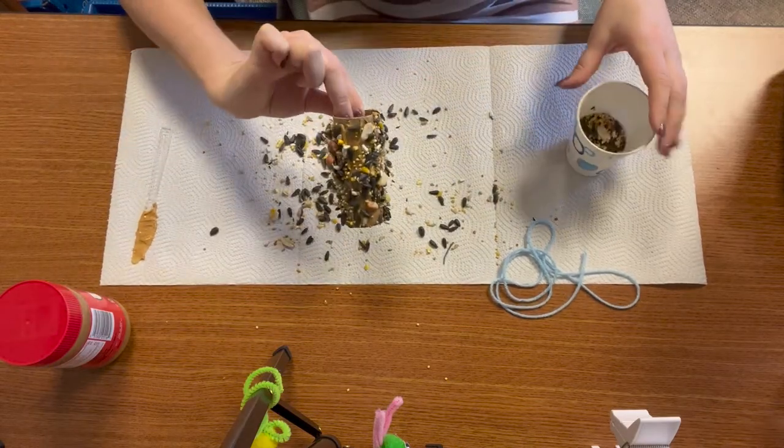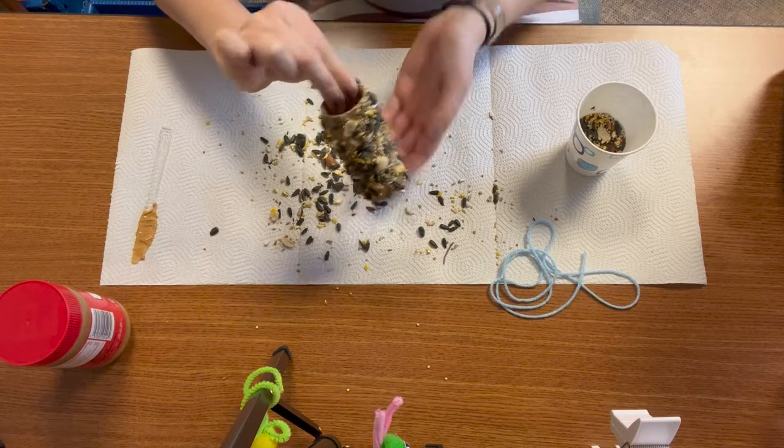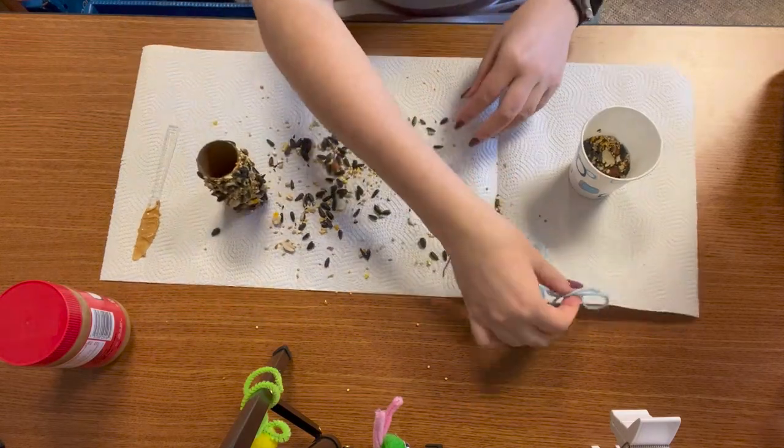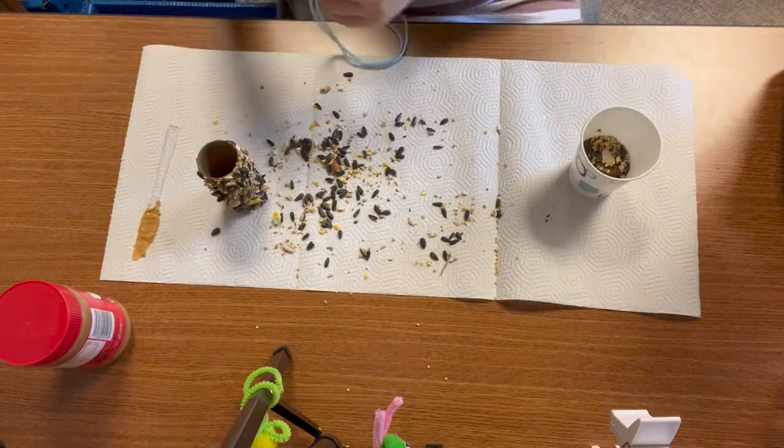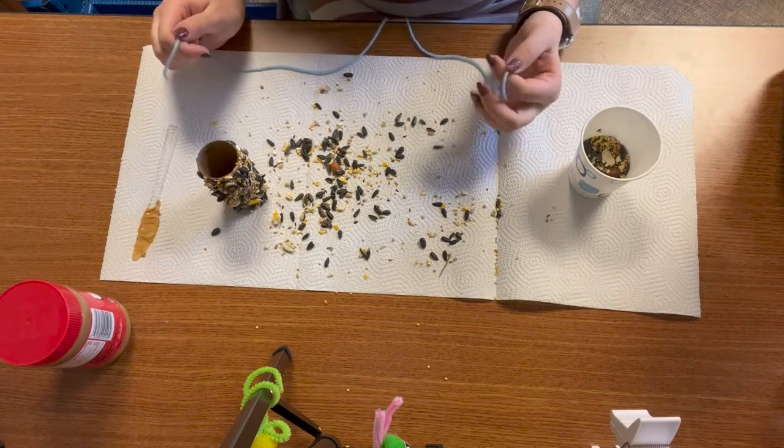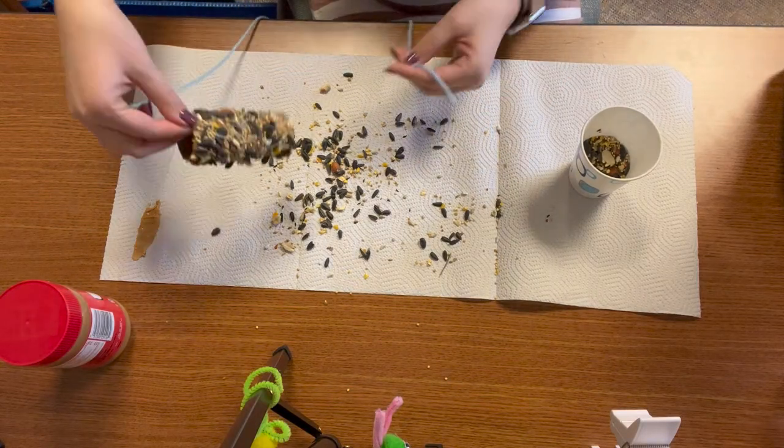So I have my toilet paper roll all covered with my bird seed, and the last thing I'm going to do is take some string and string it through my toilet paper roll, so that way I can hang this bird feeder on a tree.